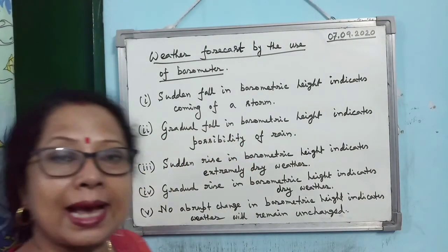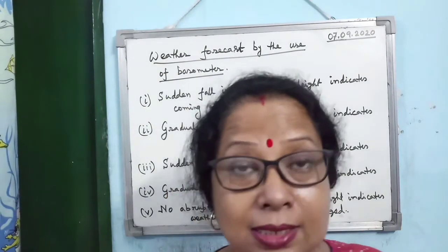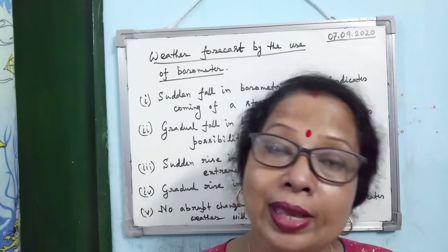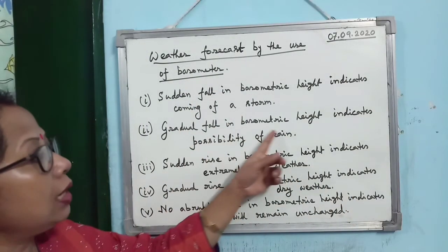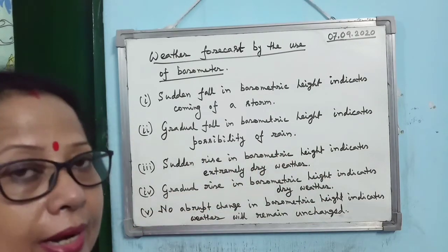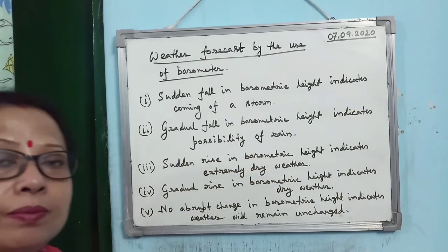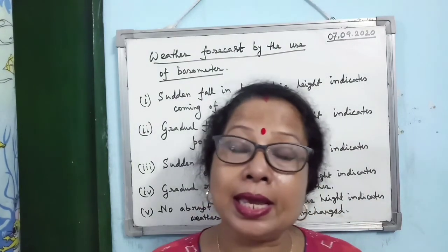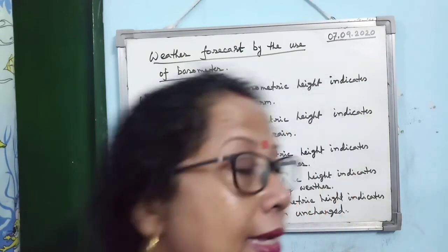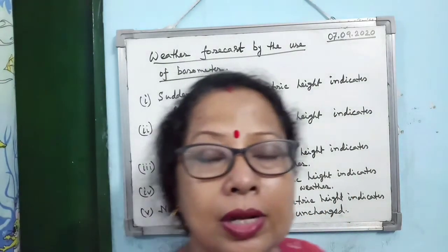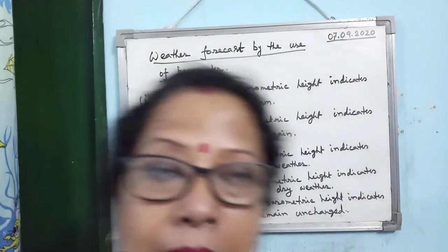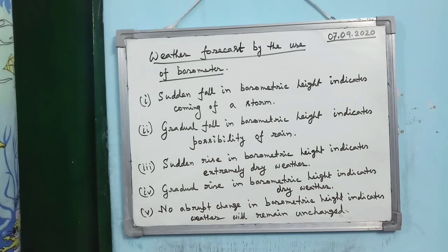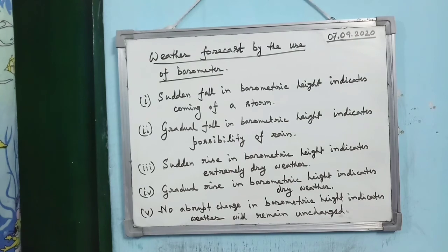If the barometric height gradually falls, it means water vapour is entering the air — when water vapour in air increases, there is a possibility of rain. A sudden rise in barometric height indicates extremely dry weather. A gradual rise indicates dry weather. No abrupt change in barometric height indicates weather will remain the same.